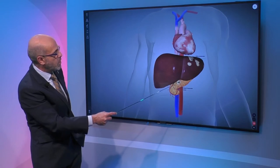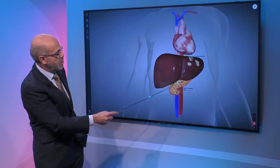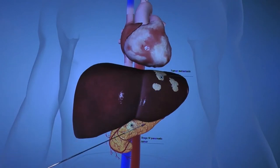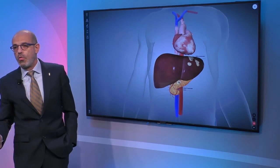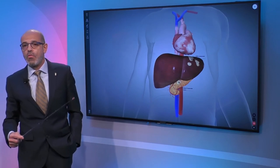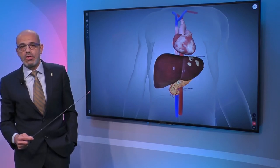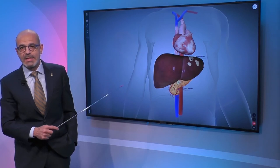The way this is shown indicates that there are metastases — metastases are branches of the initial tumor — in the liver. This is stage 4 pancreatic cancer, which is not when you want to diagnose it. More and more research is trying to show us that we can detect this earlier.